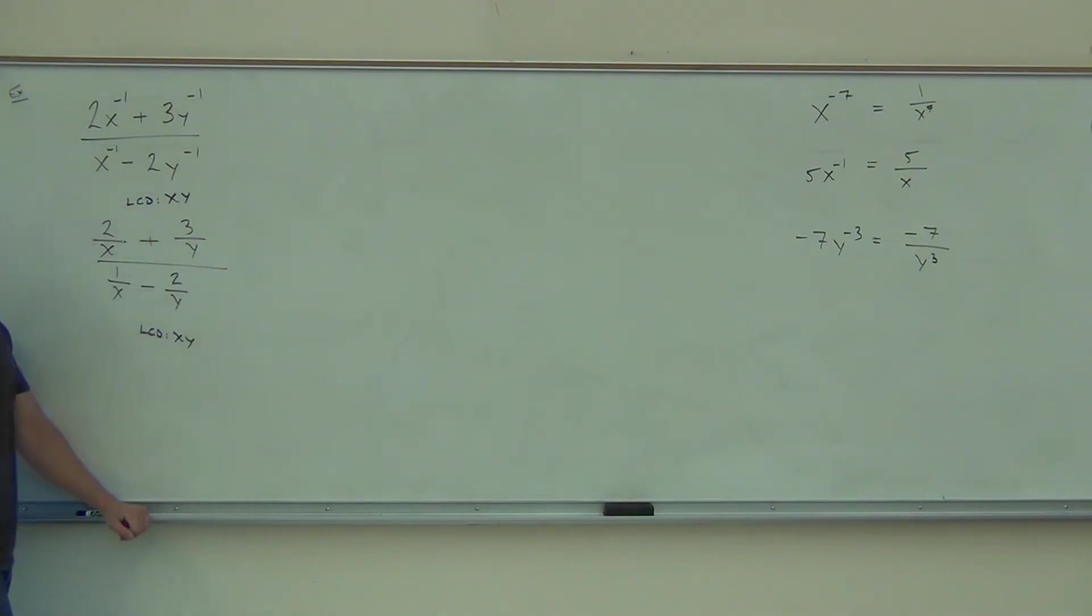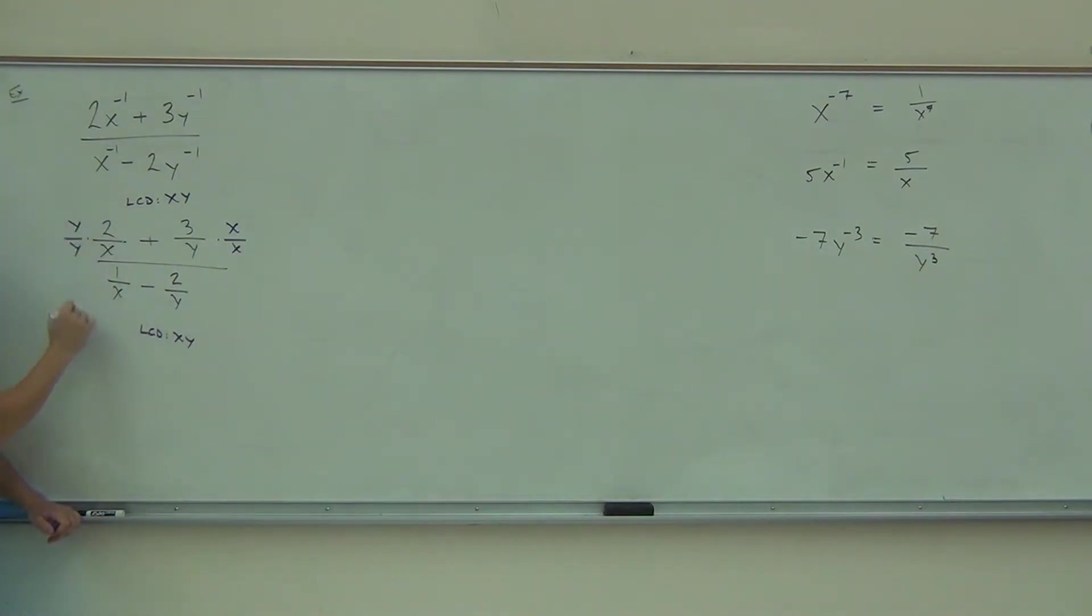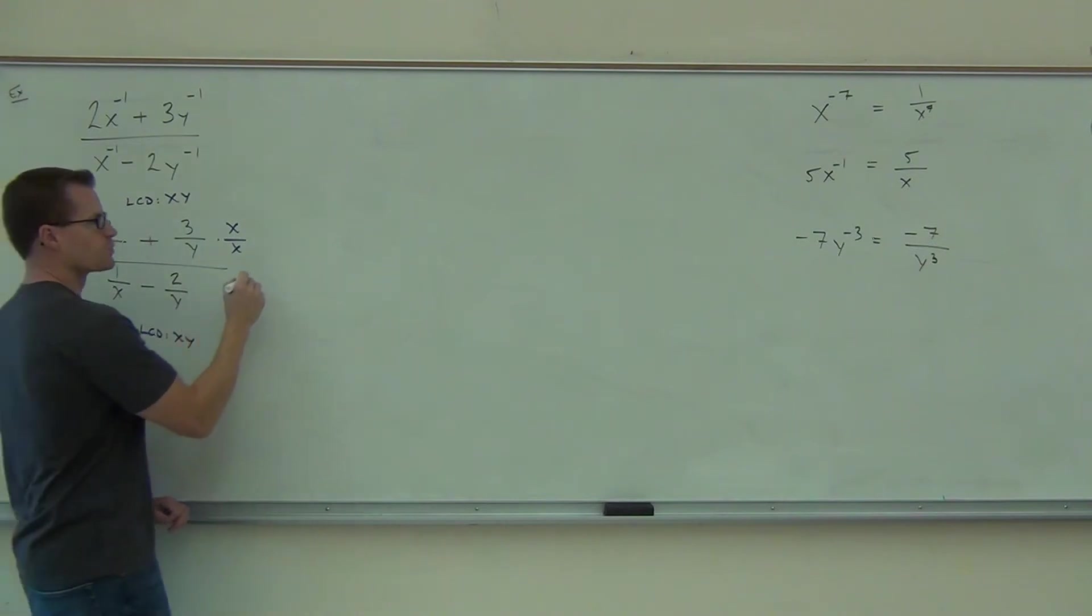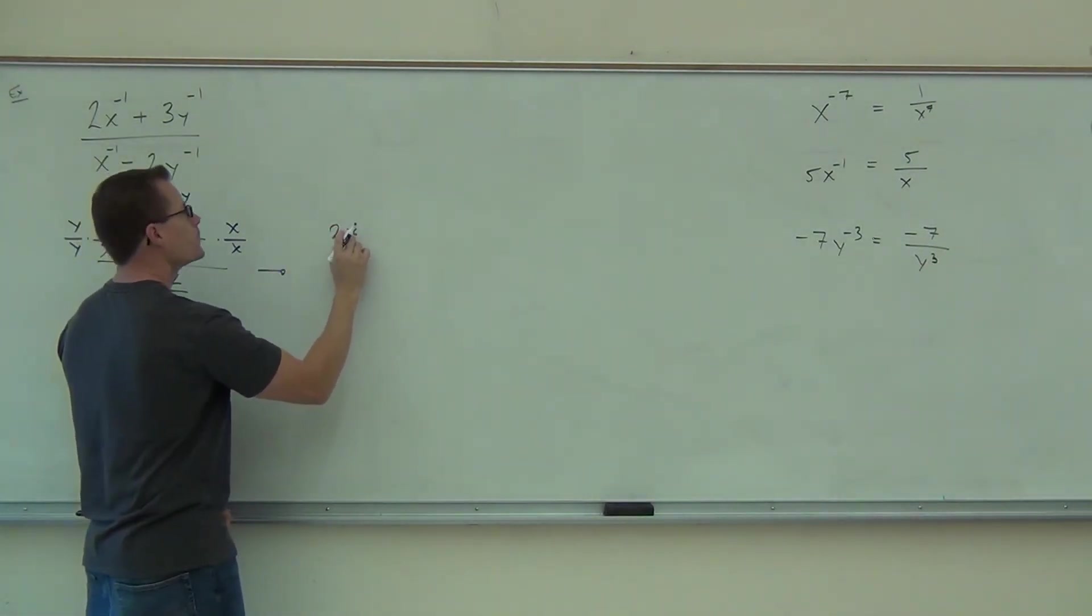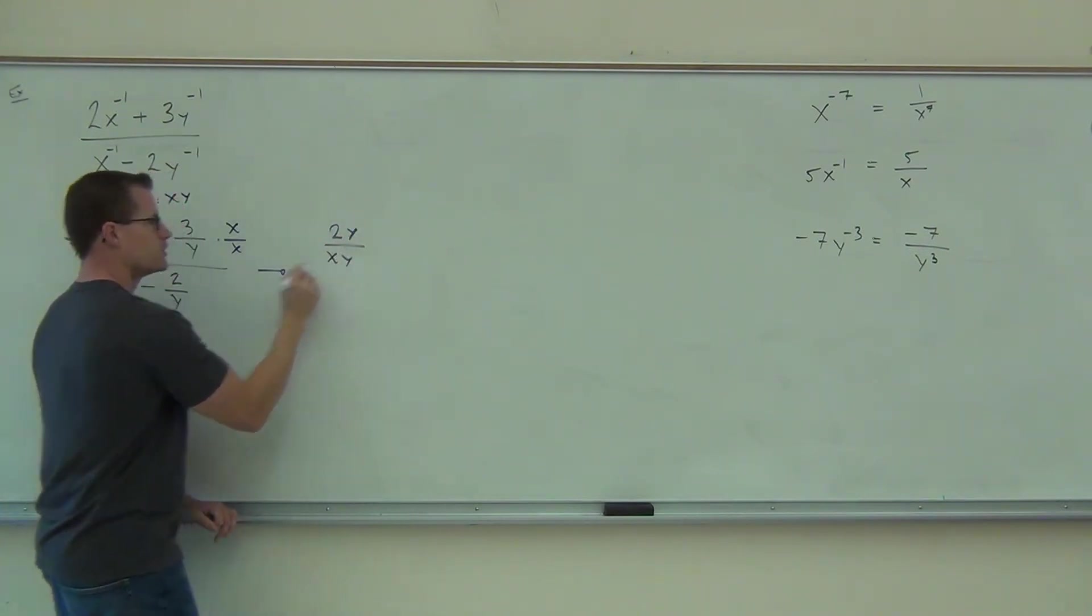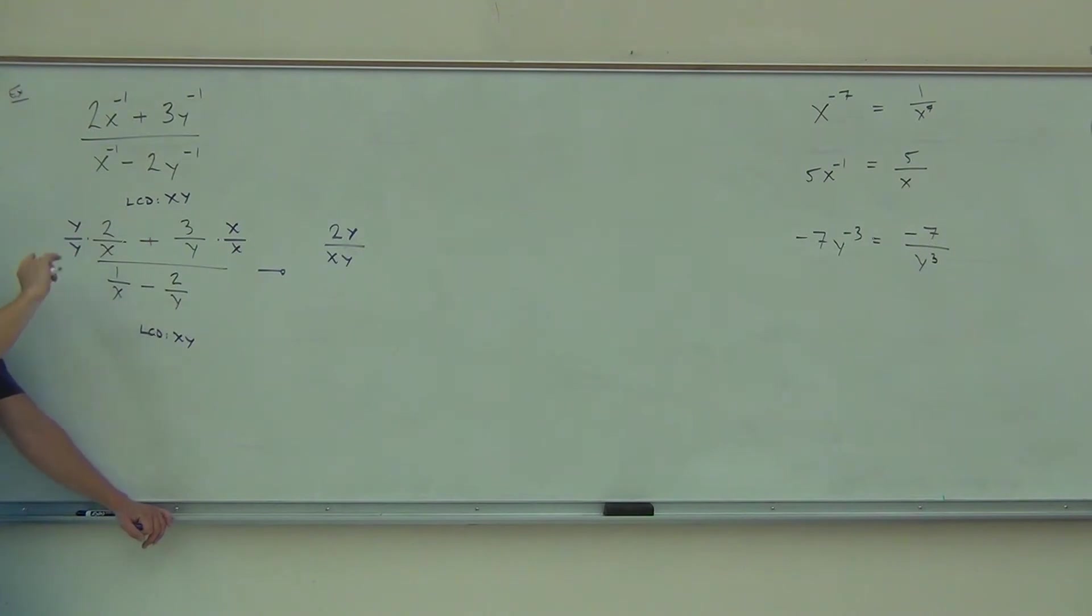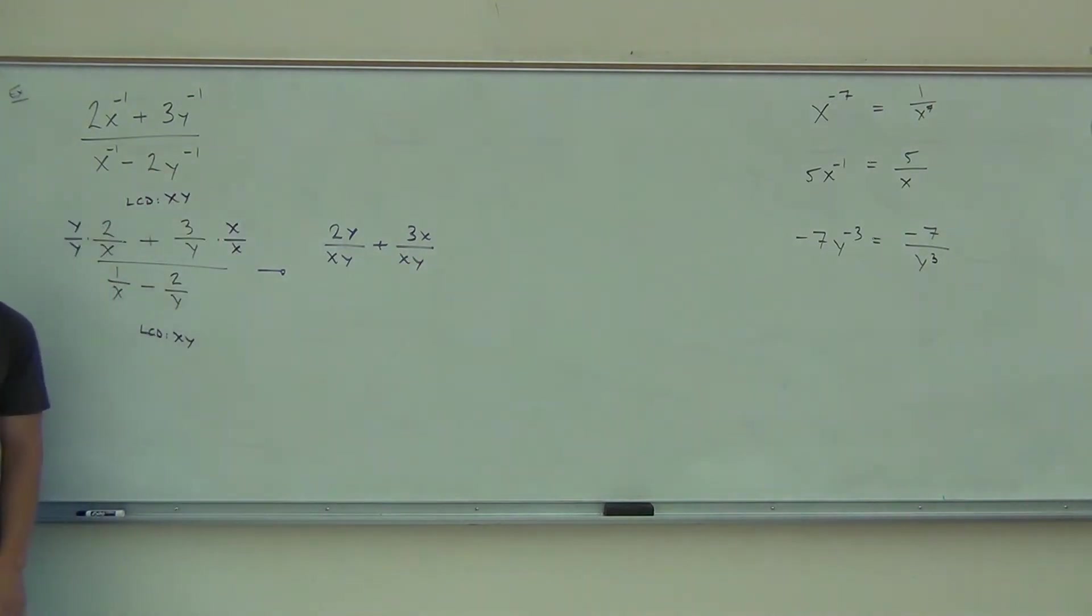LCD on the numerator. What do I need to multiply this one by? Just X? This one? Y. So for our numerator, we're going to have 2Y over XY. Notice it doesn't matter how I put the XY, I can put YX or XY. Plus 3X over XY.